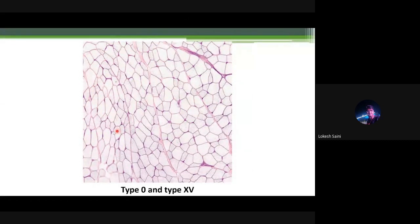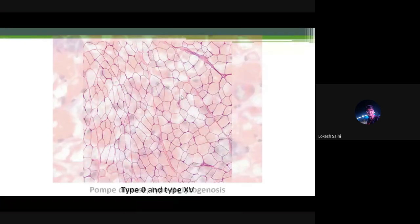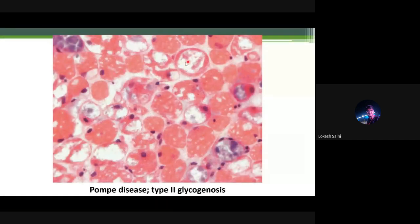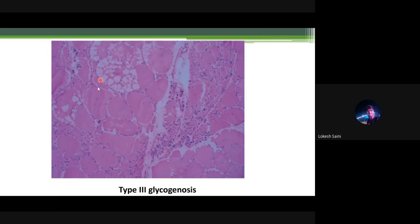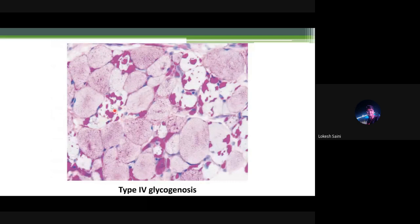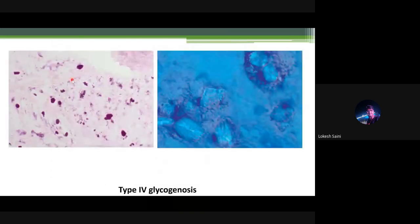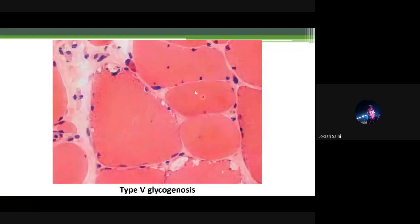All of these can show vacuolar change with PAS-positive sub-sarcolemmal deposits. Anderson disease (type 4) may show material resistant to digestion — not present in our case. No significant regenerating fibers, putting McArdle's disease lower down. Type 0 and type 15 biopsy show no deposits on PAS and complete glycogen depletion. Pompe's disease shows glycogen storage vacuoles — sub-sarcolemmal, displacing cytoplasm to periphery. Type 3 glycogenosis shows a similar overlapping picture. Type 4 glycogenosis is associated with diastase-resistant birefringent crystalloids on polarized microscopy — absent in our case. Type 5 also shows sub-sarcolemmal glycogen vacuoles.